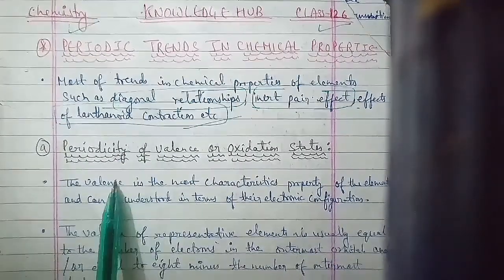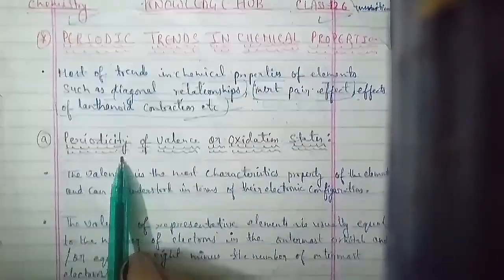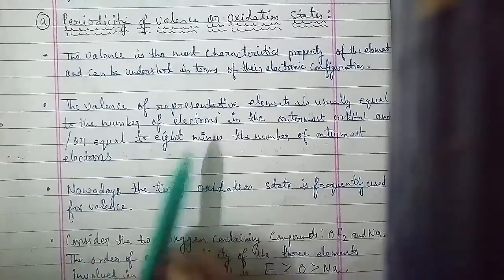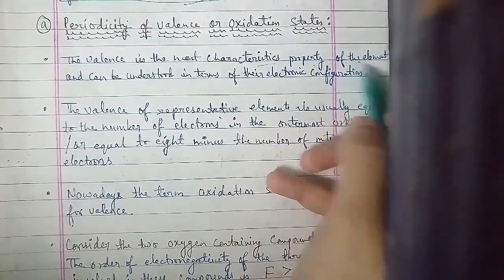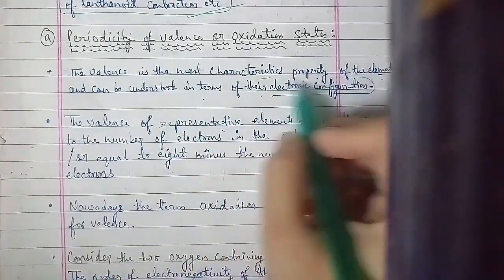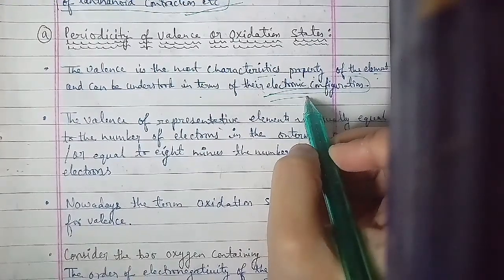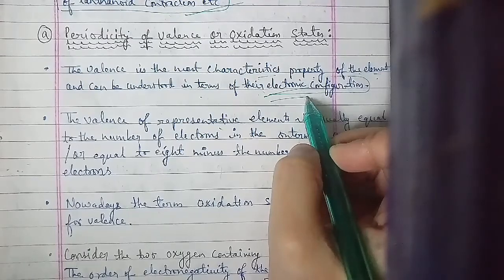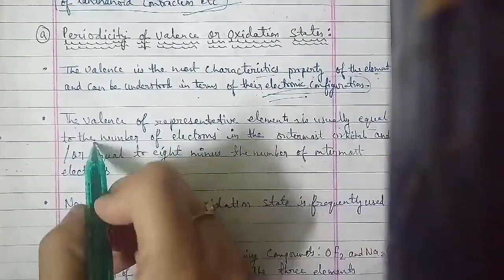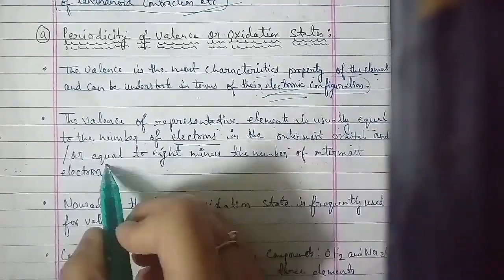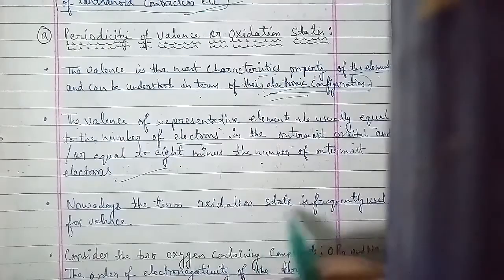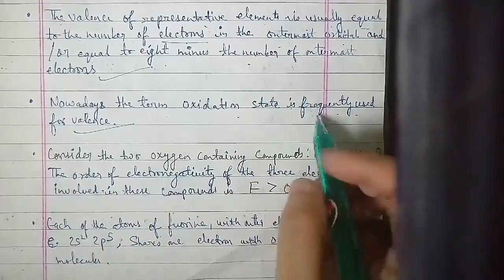Moving on with the first sub-part: periodicity of valence or oxidation state. Valence is the most characteristic property of an element, and it can be understood in terms of electronic configuration — how the property varies throughout the periodic table. The valence of a representative element is usually equal to the number of electrons in the outermost orbital, or equal to eight minus the number of outermost electrons. The term oxidation state is frequently used for valence.